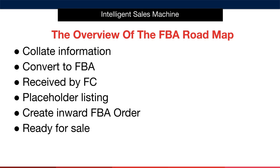Then we will convert the listing over to FBA. This informs Amazon of our intention to use their fulfilment services when our stock arrives and the sales start flowing. After this, we will create the actual shipment of stock items into Amazon according to their requirements. This stock order will then be shipped into the Amazon centres and received by them.